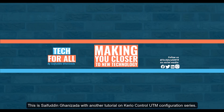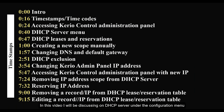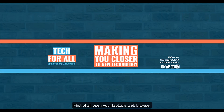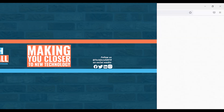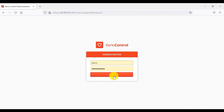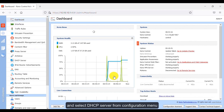Hey guys, welcome back. This is Saifuddin with another tutorial on the Kerio Control UTM configuration series. In this video I will be discussing the DHCP server under the configuration menu. First of all, open your laptop's web browser, login to the Kerio Control administration panel, and select DHCP server from the configuration menu.